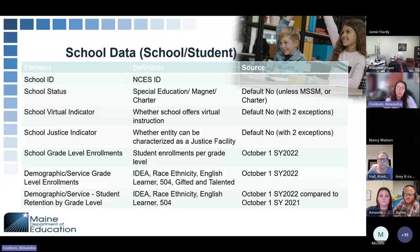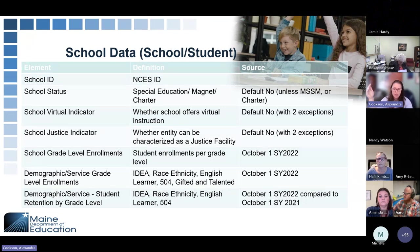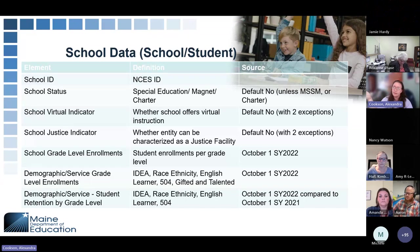For demographics, we can upload your service demographic and service grade level enrollments — that's IDEA special education, race and ethnicity, English learners, 504 students, and gifted and talented. All of that information is based on that October 1 report and will be loaded into the CRDC. We also have demographic and service data for student retention by grade levels, which is a comparison between the 2022 report and the 2021 report. You may see discrepancies depending on what data you're looking at. This is a point-in-time data collection, and if your numbers don't align with what was reported in October 2021, you'll see differences — but you can overwrite those if needed.